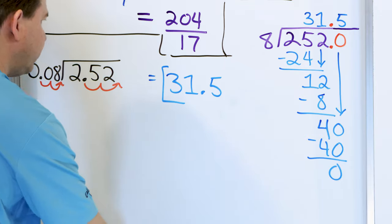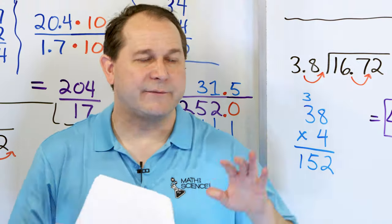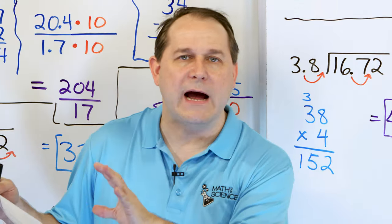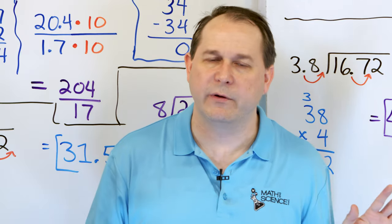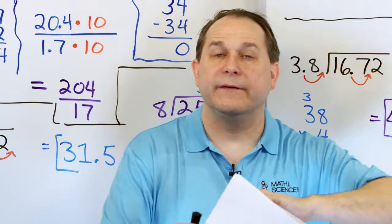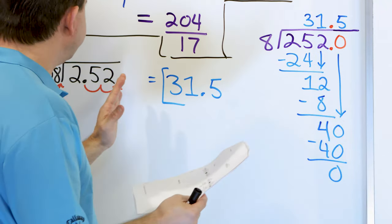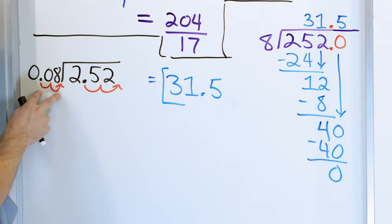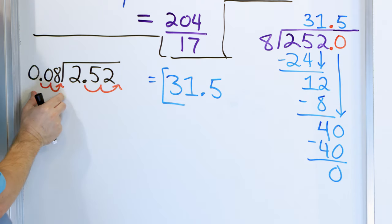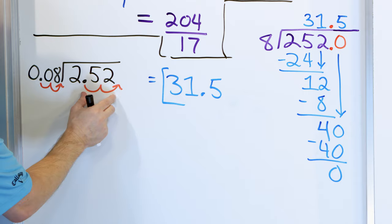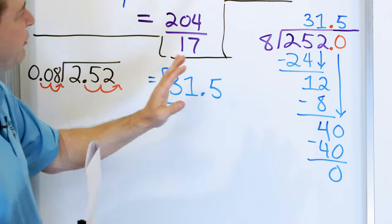31.5. Alright, that is a long lesson. A lot of writing. I don't want you to lose sight of the big picture. The big picture is: you have to do this division, but the decimal on the outside — you don't want decimals there. So you move the decimal over the same number of positions on both the outside and inside, and then you do the division as normal. Sometimes after you move the decimal, you still have a decimal on the inside — it just floats up above.